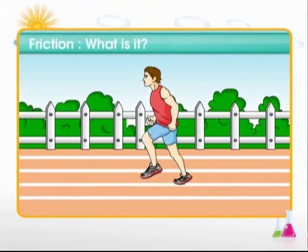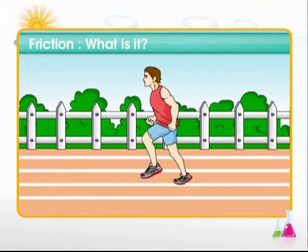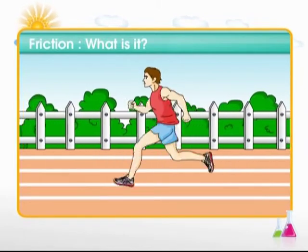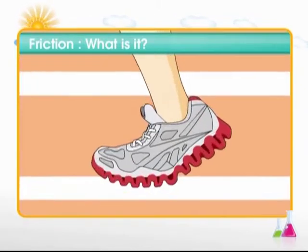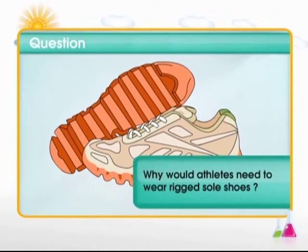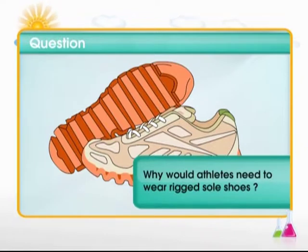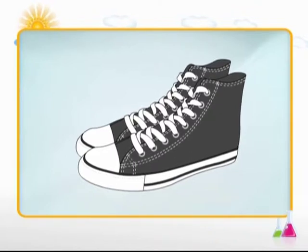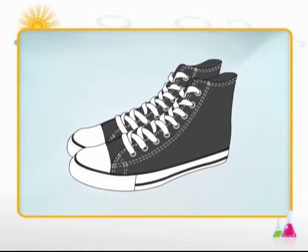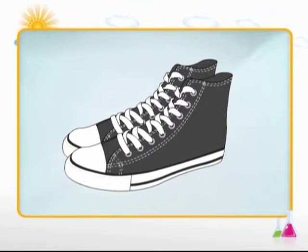Let's begin the module on friction. What is it? With what we see. Athletes are required to run at top speeds. Their shoe soles have specially designed patterns underneath on the soles. Why would they need to wear rigged sole shoes? Can't they run really fast wearing simple canvas shoes?